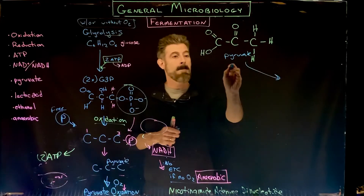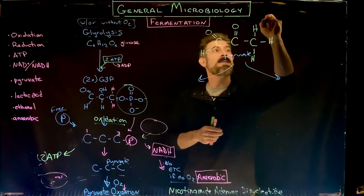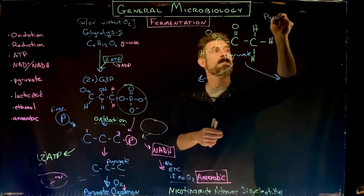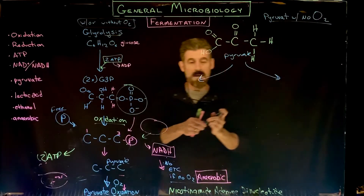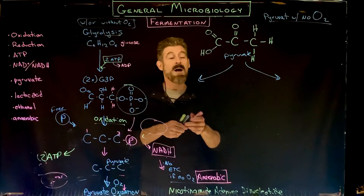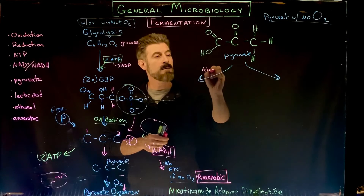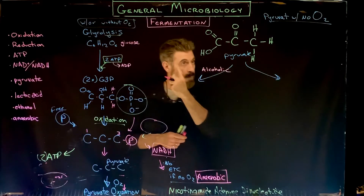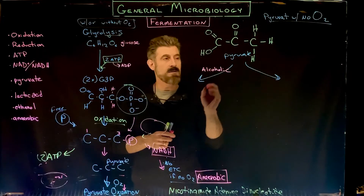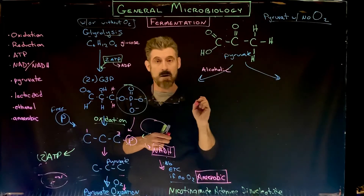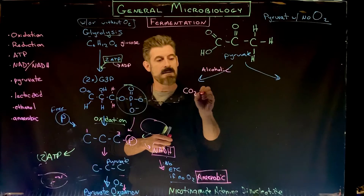Let's go over how that happens. This is our pyruvate, and there are two major pathways of fermentation. With no oxygen present, there are two possibilities. The first possibility we're going to talk about is alcoholic fermentation. In alcoholic fermentation, there are two steps.